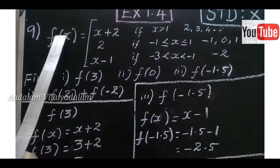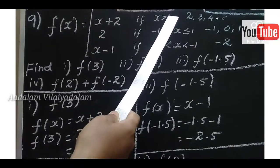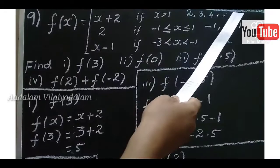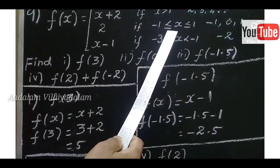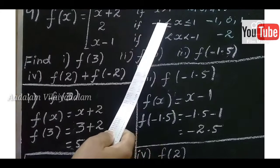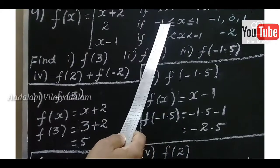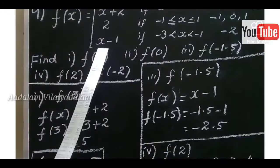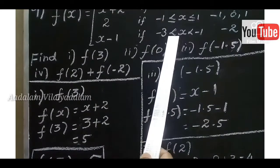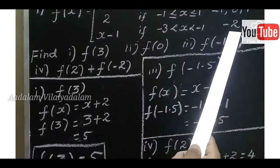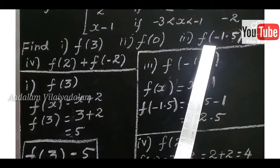Ninth question: F of X equals X plus 2 if X greater than 1, meaning values 2, 3, 4 and so on. Second: F of X equals 2 if minus 1 less than or equal to X less than or equal to 1, so X includes minus 1, 0, 1. Third: F of X equals X minus 1 if minus 3 less than X less than minus 1, so X lies between minus 3 and minus 1, giving minus 2. Find F of 3, F of 0, F of minus 1.5, and F of 2 plus F of minus 2.